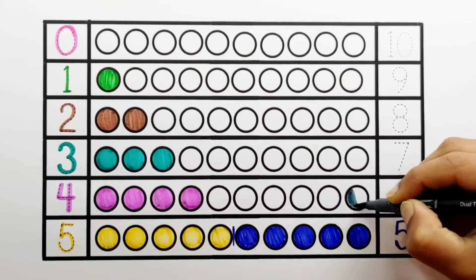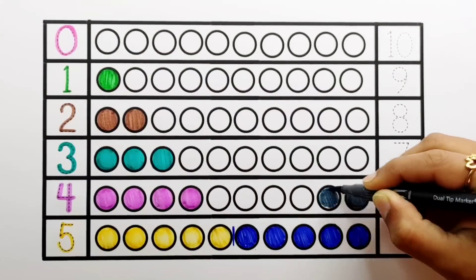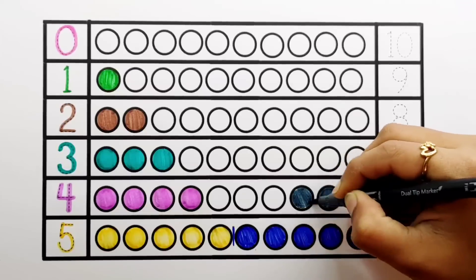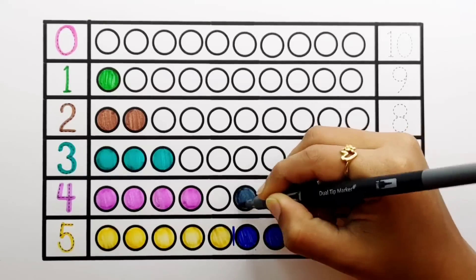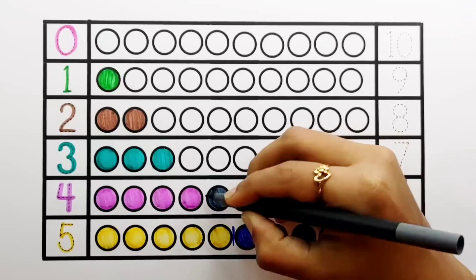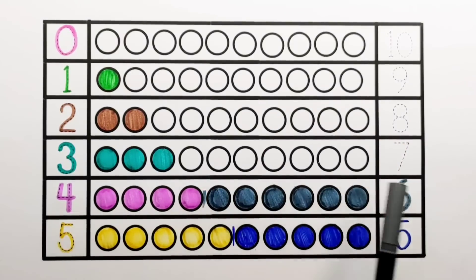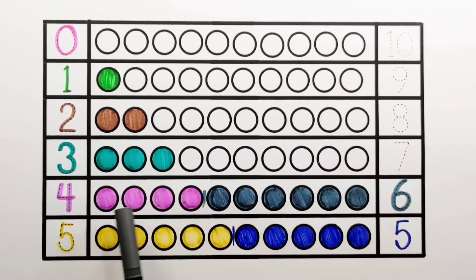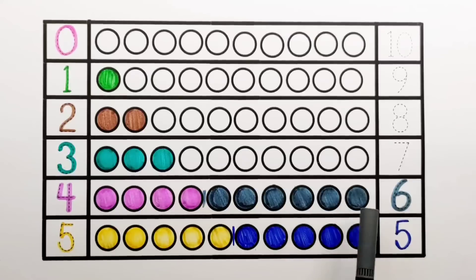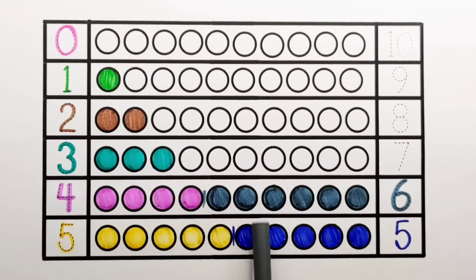Number 6. 1, 2, 3, 4, 5, 6 — 6 balls. 4 plus 6 makes 10. 1, 2, 3, 4, 5, 6, 7, 8, 9, 10. 4 plus 6 equals 10.